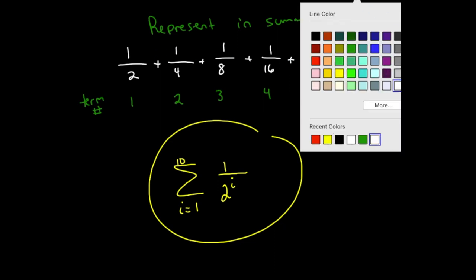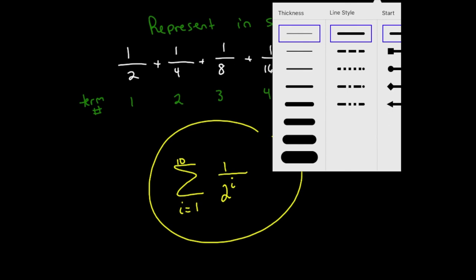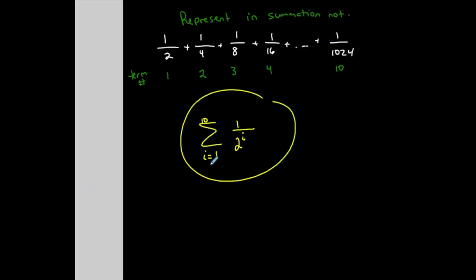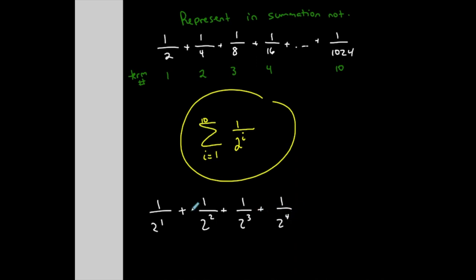Let me verify by rewriting the sum: starting at i=1 gives 1 over 2^1, plus 1 over 2^2, plus 1 over 2^3, plus 1 over 2^4, and so on, ending at i=10 with 1 over 2^10. Two to the first is 2, to the second is 4, to the third is 8 — this matches exactly what I have in the original sum. Therefore, this is the correct formula.